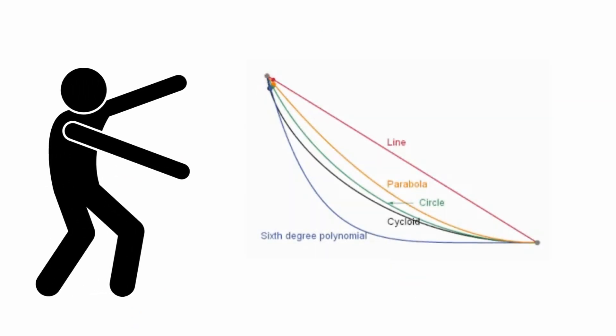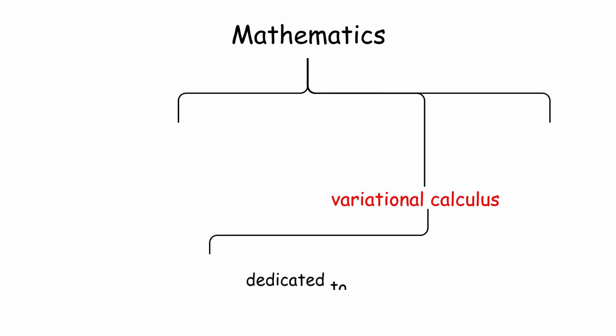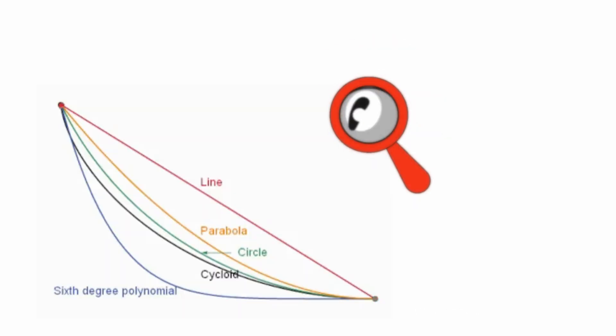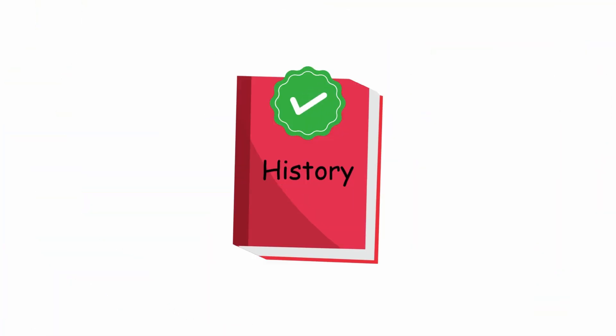This challenge attracted the attention of the most influential mathematicians of the time, giving rise to variational calculus, a branch of mathematics dedicated to finding functions that optimize certain values. The search for this optimal curve and the intellectual competition among great mathematicians marked a milestone in the history of mathematical analysis.